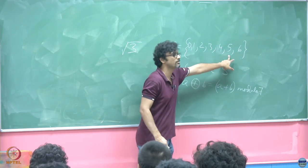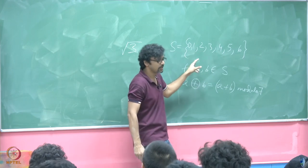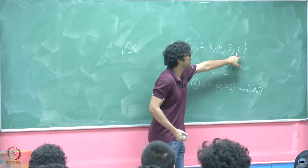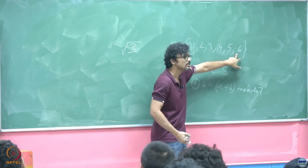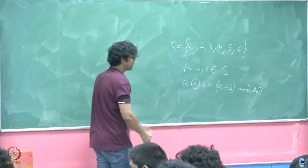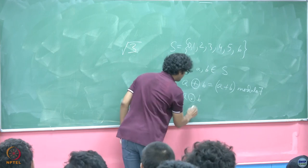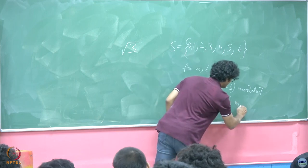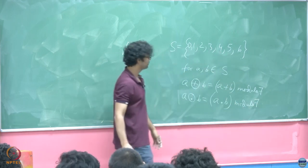Modulo essentially means you add them, divide them by the number, 7 here in this case, take the remainder. So of course, if you take any two numbers here, there is a chance that the number might be more than 7. If you take 1 and 2, it is just 3. But if you take 5 and 6, it is 11 divided by 7, that is 7 times 1 plus 4. So 4 is the answer. And by the same token, we define the multiplication also in this manner, A multiplied by B modulo 7.